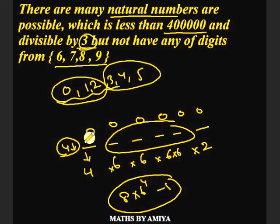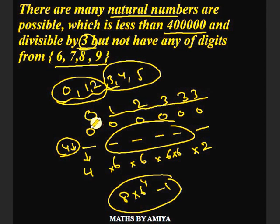You might think why I am using 0 here. So if we take 0, 1, 2, 3, 3, 3, if this is our number. So if your leading number is 0, this becomes a 5 digit number. If 2 leading digits become 0, this becomes a 4 digit number and so on.